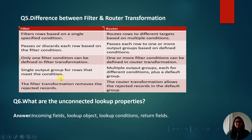In router, we can define more conditions. Filter transformation has a single output group for rows that meet the condition, while router has multiple output groups, each for a different condition, plus a default group. In filter transformation, rejected records are removed, but in router transformation, rejected records go into the default group.